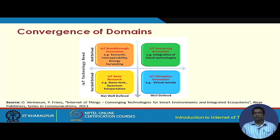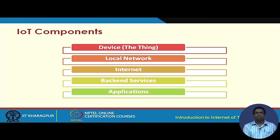There has been a lot of breakthrough innovation in these areas. Disruptive innovations include virtual reality and augmented reality and their incorporation into IoT networks. Things like cloud computing and big data are sustaining technologies for IoT, and there has been a lot of work on these technologies as well.